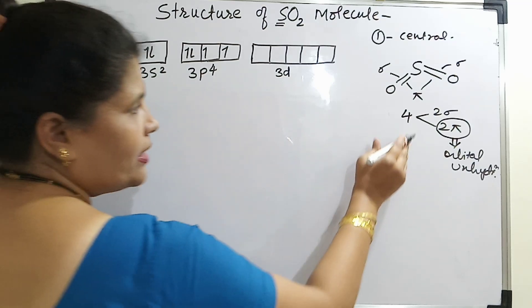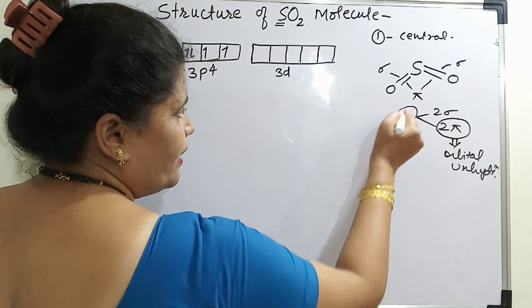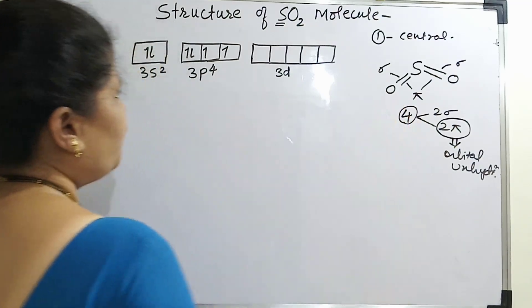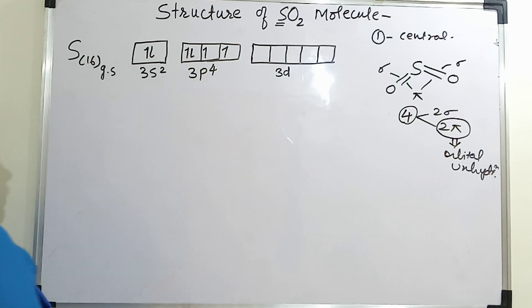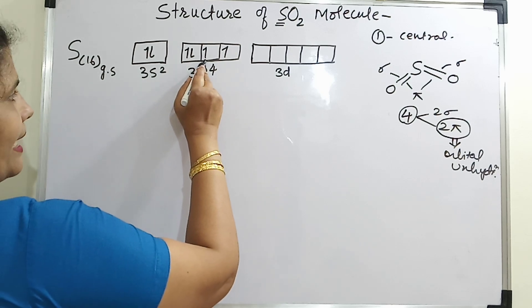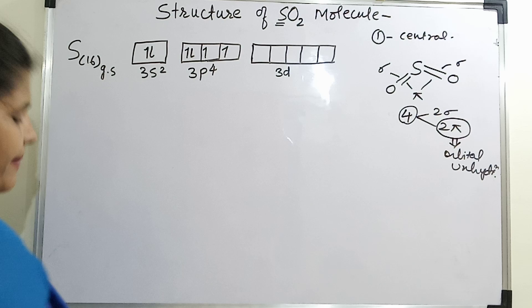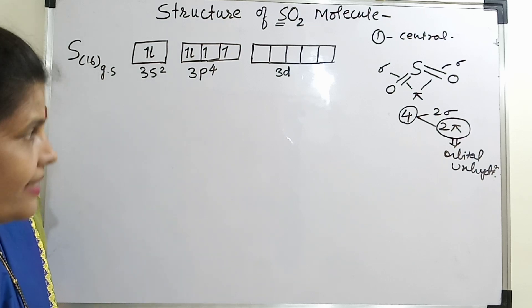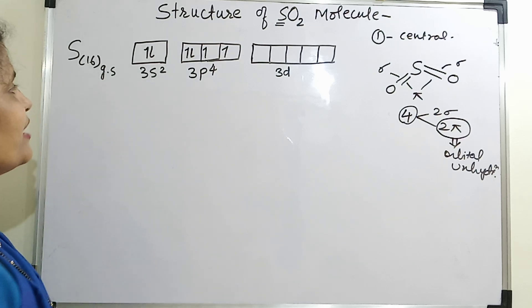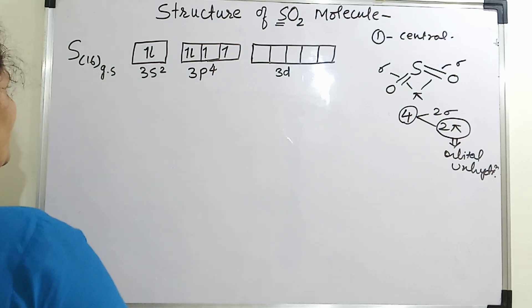Now, how many bonds do I have to form in all? There are 4 bonds, so I need 4 unpaired electrons in the ground state. But as you see, there are only 2 unpaired electrons, and therefore the excited state must be carried out.